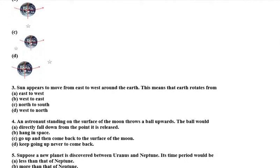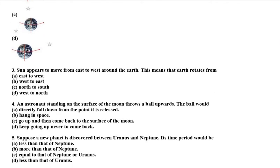Sun appears to move from east to west around the earth. This means that earth rotates from east to west, west to east, north to south, or west to north. So the movement of our sun is from east to west. So where will it be from the earth? It will be from the opposite of the earth, that is west to east.